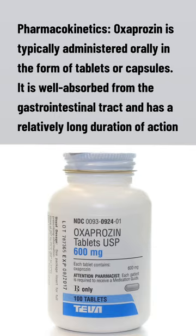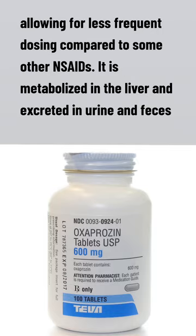Pharmacokinetics: Oxaprozin is typically administered orally in the form of tablets or capsules. It is well absorbed from the gastrointestinal tract and has a relatively long duration of action, allowing for less frequent dosing compared to some other NSAIDs. It is metabolized in the liver and excreted in urine and feces.